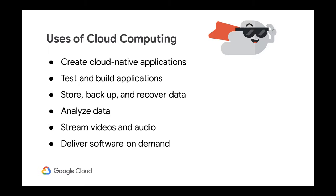Here are some examples. Number one is creating a cloud-native application — you can quickly build, deploy, and scale applications on web, mobile, or using an API, taking advantage of cloud-native architecture built from the ground up. For building and testing apps, using cloud infrastructure costs less time and money than doing it yourself. You can store, backup, and recover your data, and cloud is good for protecting big data privacy in a cost-efficient way.